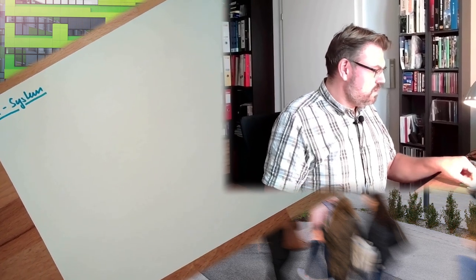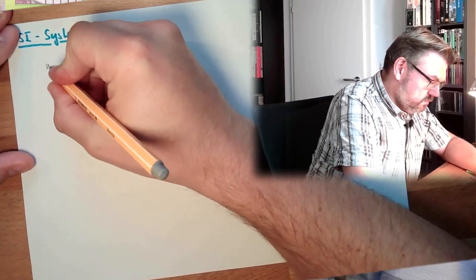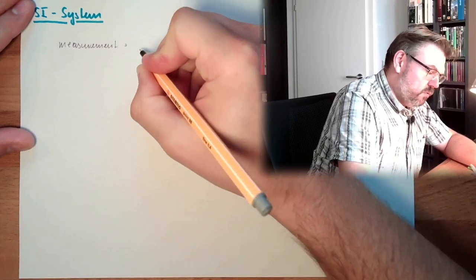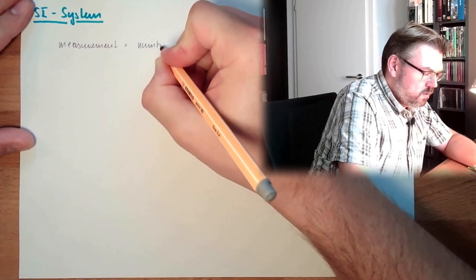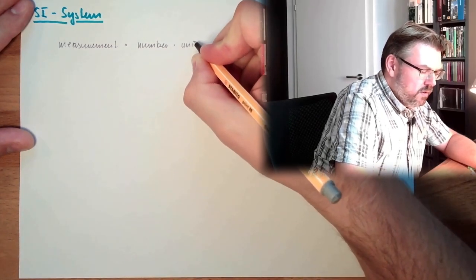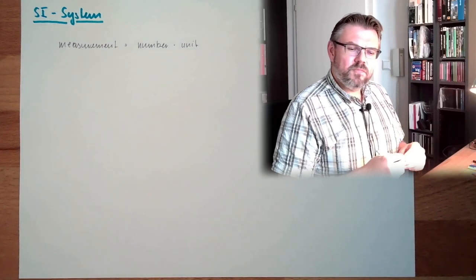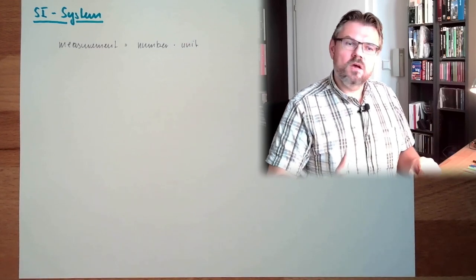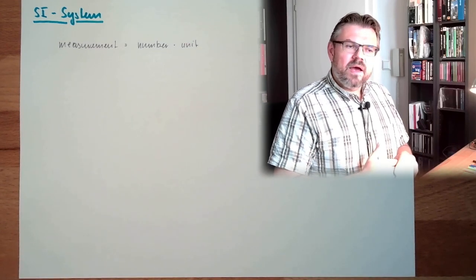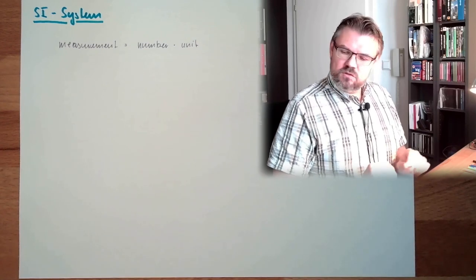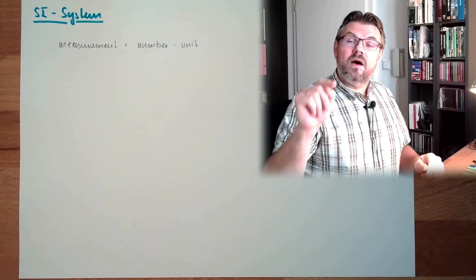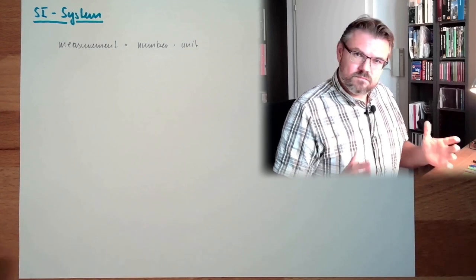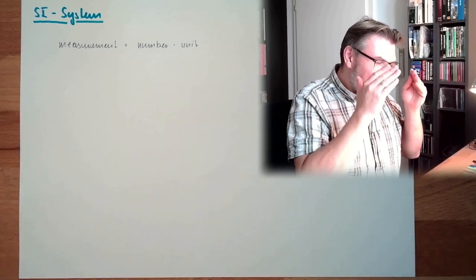Write it down. The measurement equals a value, a number, multiplied with a unit. So this unit is the base thing which I am comparing the current measurement. I will say, okay, my measurement equals like two and a half times of this unit. If something is two and a half meters long, I say it's two and a half times as long as one meter is. That's a measurement. I need a number and a unit.